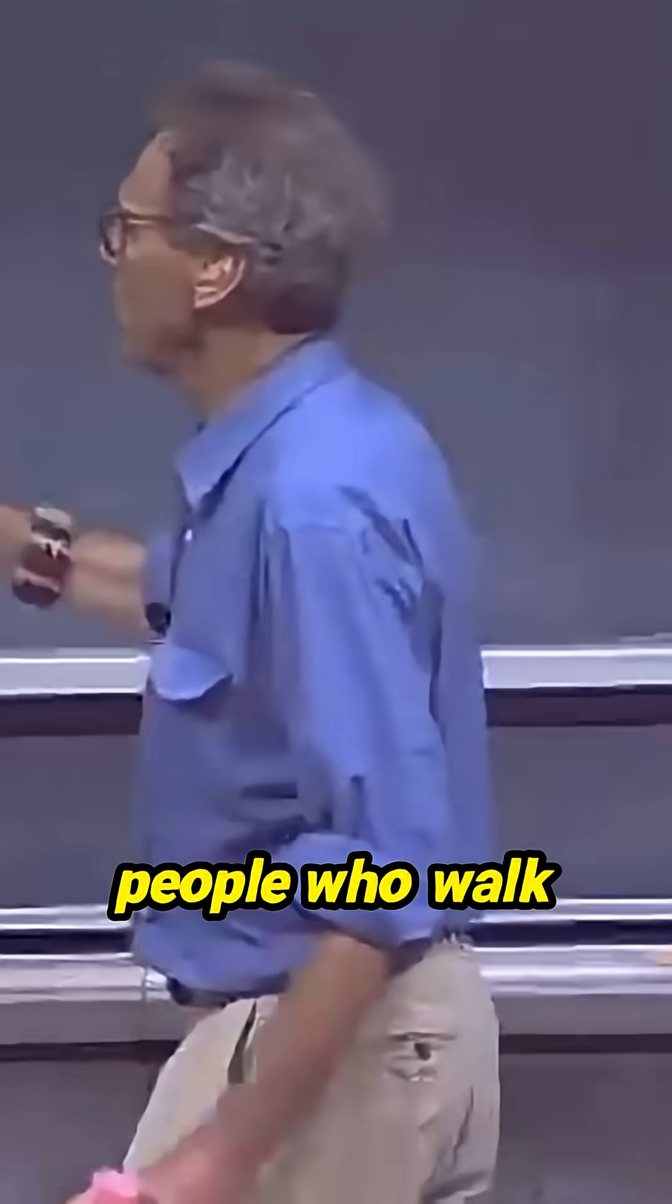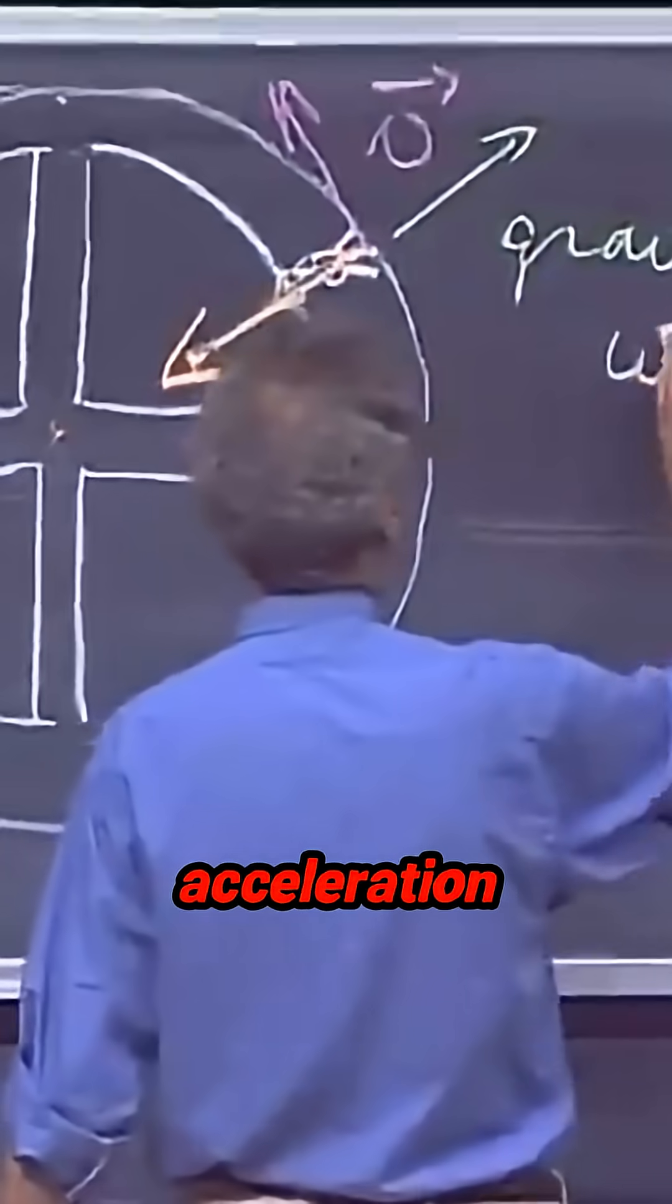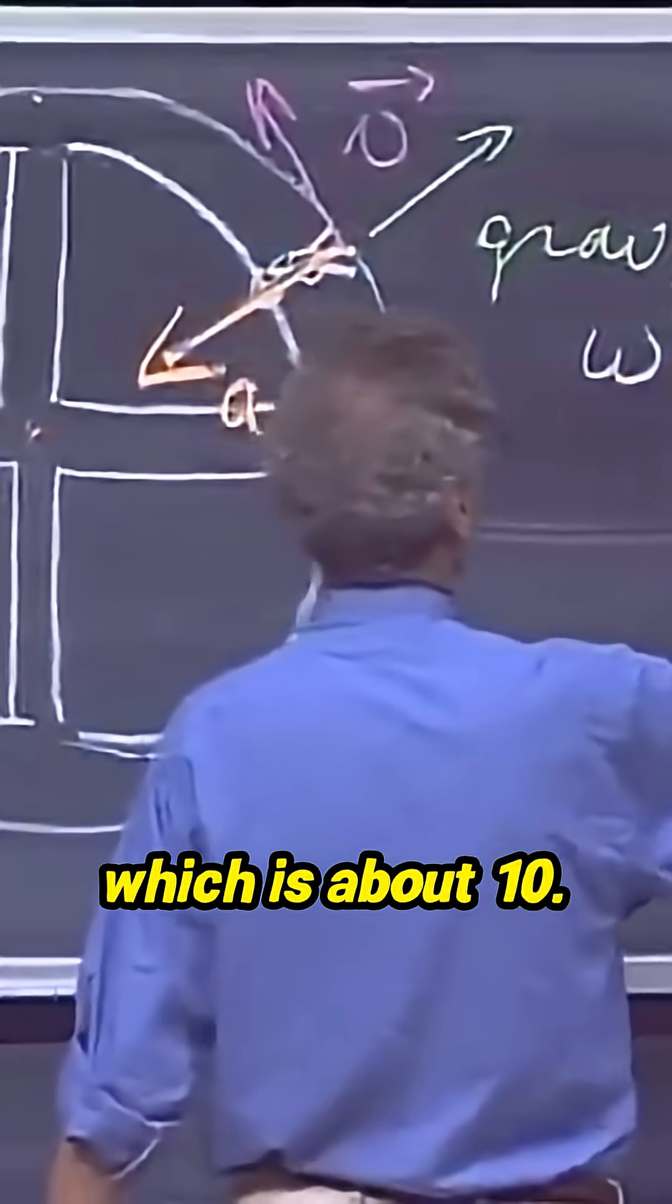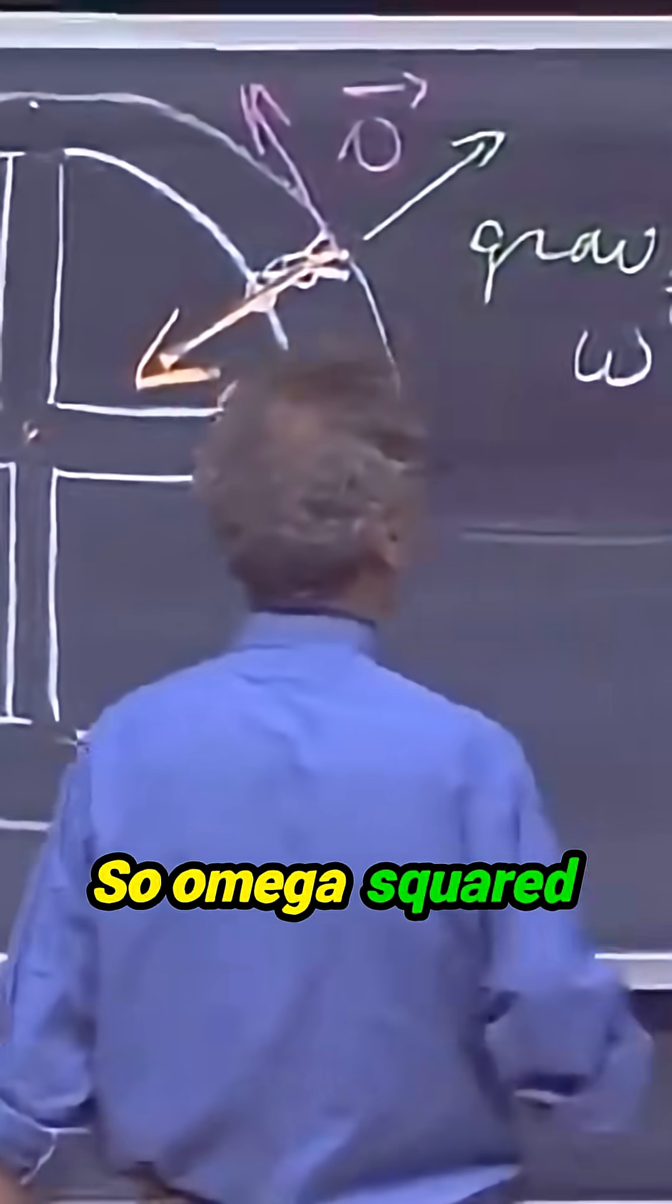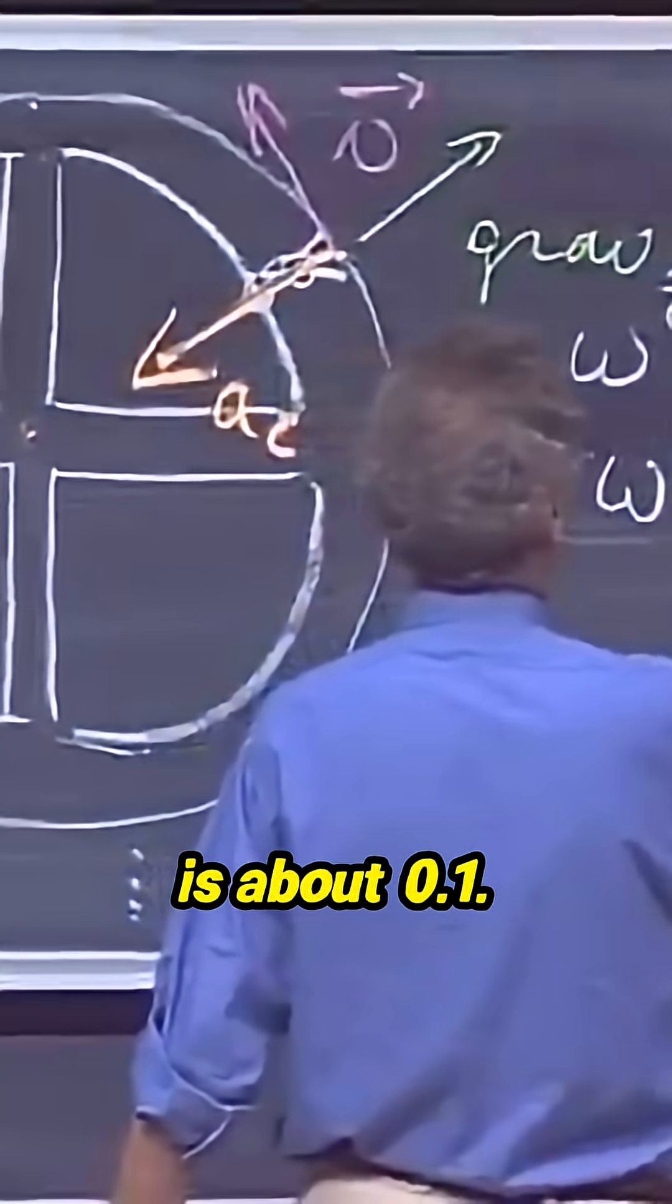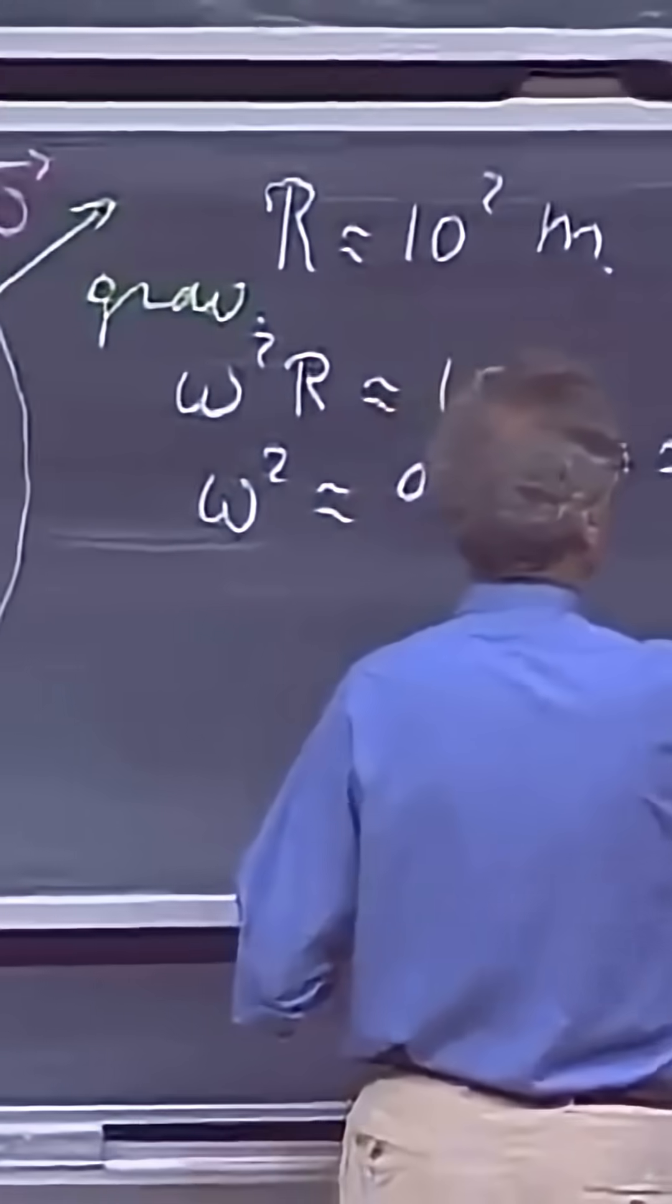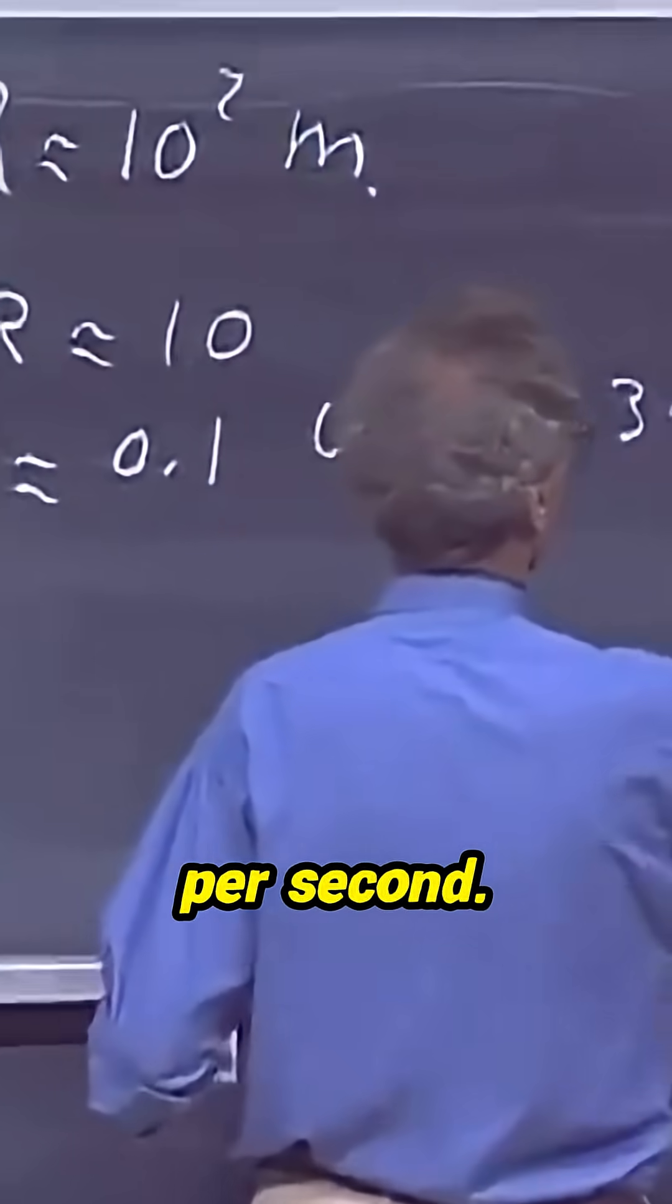So we want the people who walk around in this corridor to have an acceleration, omega squared r, which is about 10. So omega squared is about 0.1, so omega is about 0.3 radians per second.